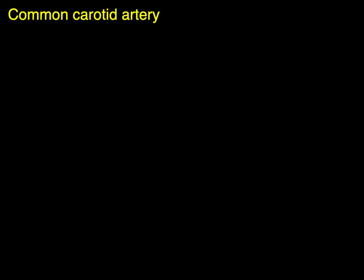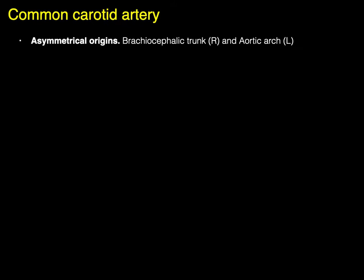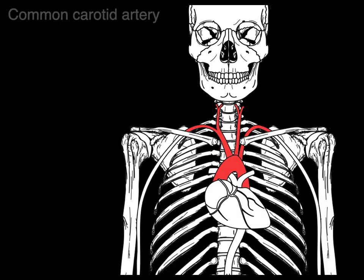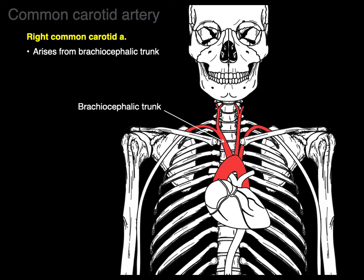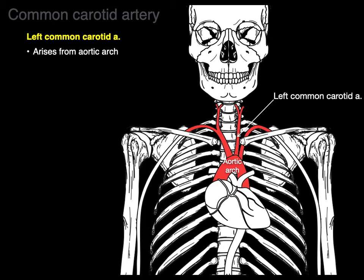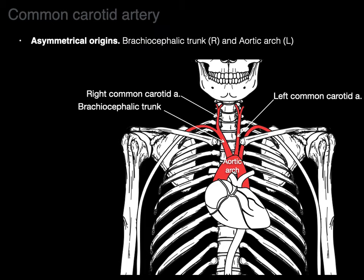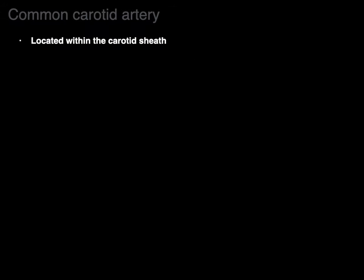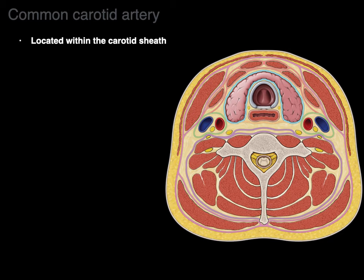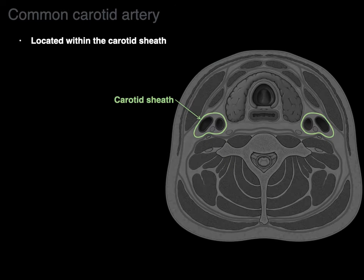Now let's go to the common carotid arteries. The common carotid artery also has an asymmetrical origin — the brachiocephalic trunk gives rise to the right common carotid, and the aortic arch gives rise to the left common carotid. The common carotid artery is located within the carotid sheath, seen here in cross-section at the C6 level. Inside the carotid sheath are the common carotid artery, the internal jugular vein, and the vagus nerve.